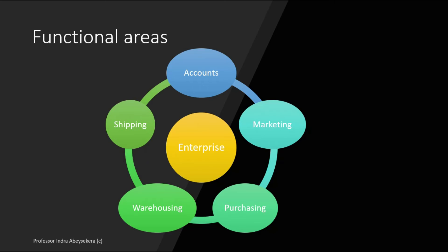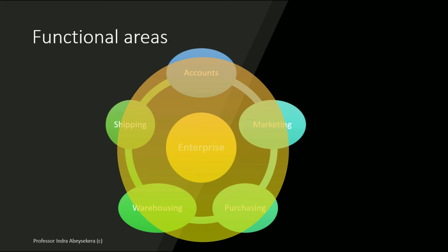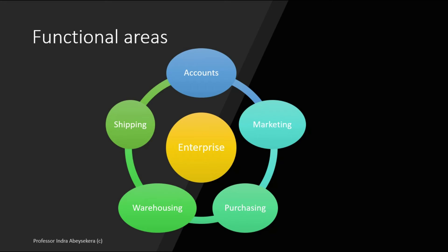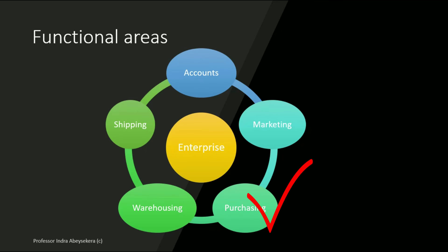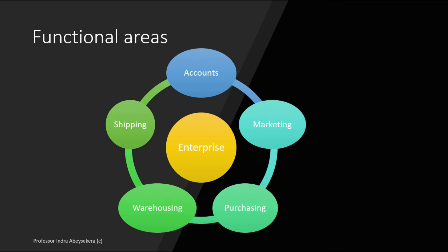If you look at an accounting subsystem, we can look at it from a functional areas perspective. We can look at the accounting subsystem and its elements or subsystems as accounts, marketing, purchasing, warehousing, and shipping. The focus of the accounting information system is about the financial aspects, and when it focuses on the subsystems, it's focusing on the financial implications in those subsystems of the accounting subsystem.